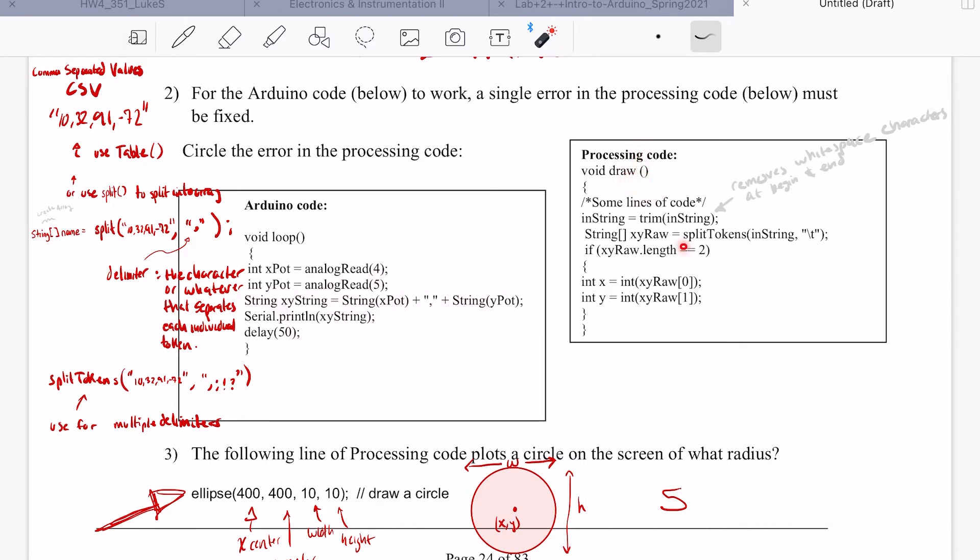But the processing code wants to split the values when it finds a forward slash t. So it's not going to find any forward slash t, so it's never going to split the string up and divide it into its x and y line components like it wants to. So if we could just change this to a comma, it would be able to properly split up the string that is being fed in.